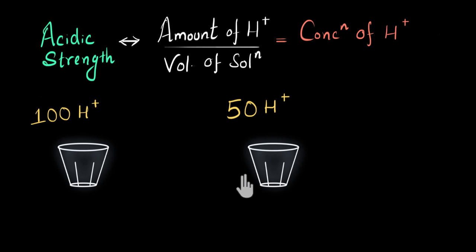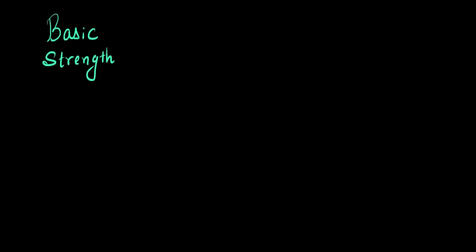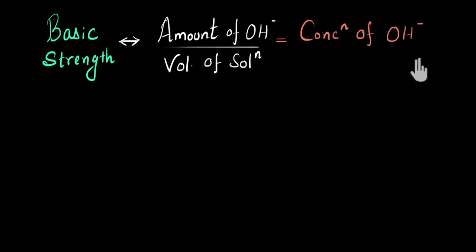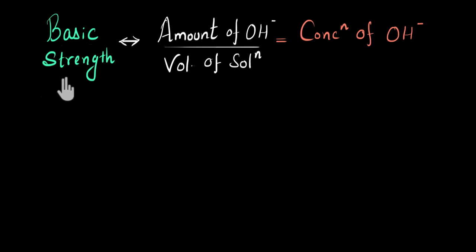Now let's talk about basic solutions. They follow the same logic. The only difference is that basic solutions have more OH⁻ ions. So the strength of a basic solution depends not only on the amount of OH⁻ ions, but also on the volume of the solution in which the OH⁻ ions are dissolved — meaning it depends on the concentration of OH⁻ ions. If the concentration of OH⁻ is more, it's more basic; if the concentration of OH⁻ is less, the solution is less basic.